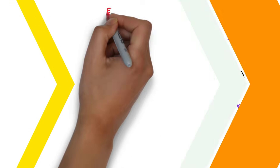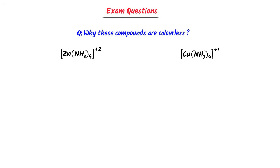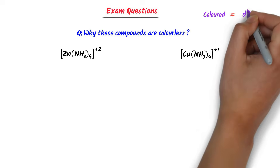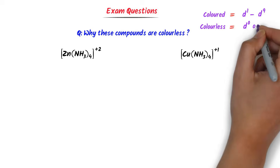Now we will start learning exam and JEE Main questions. Consider this question: why are these coordination compounds colorless? We already know that coordination compounds are colored if their d-orbitals have 1 up to 9 electrons, while coordination compounds are colorless if they have 0 or 10 electrons.